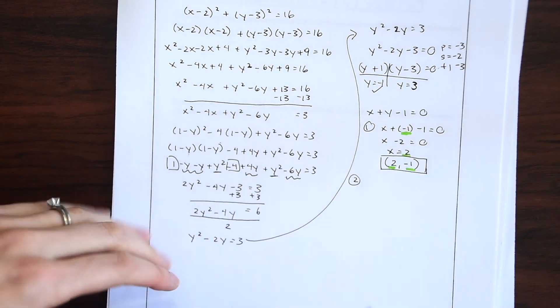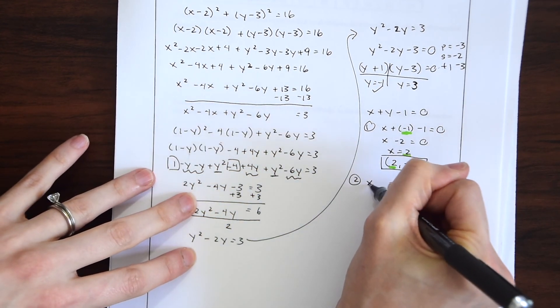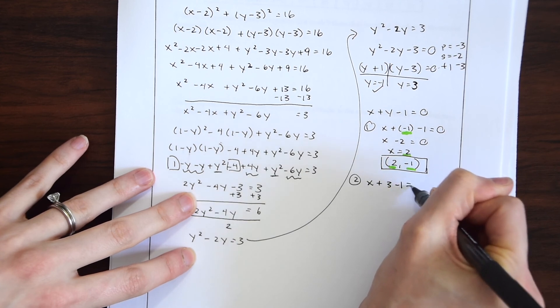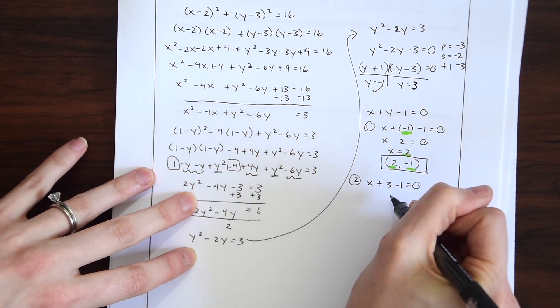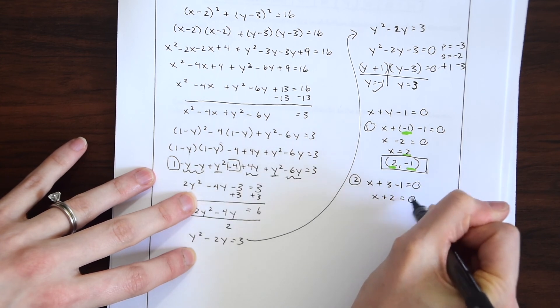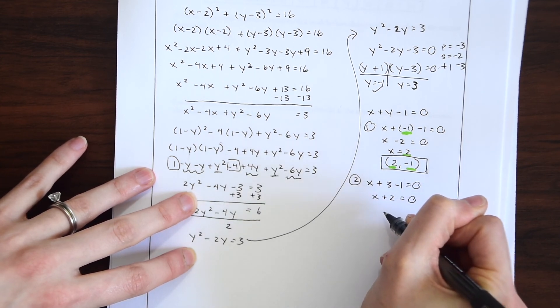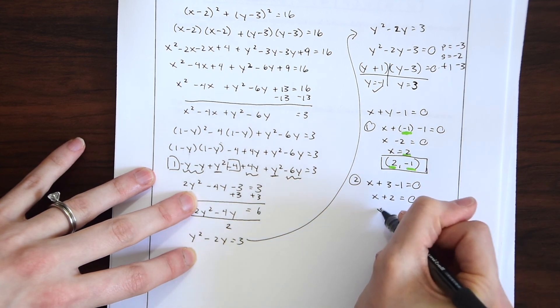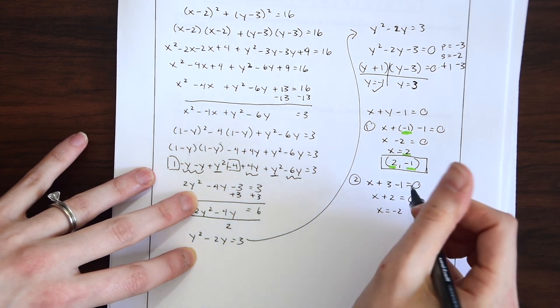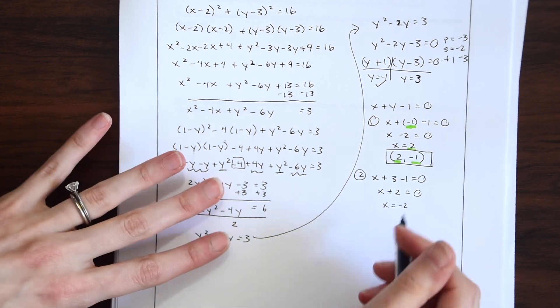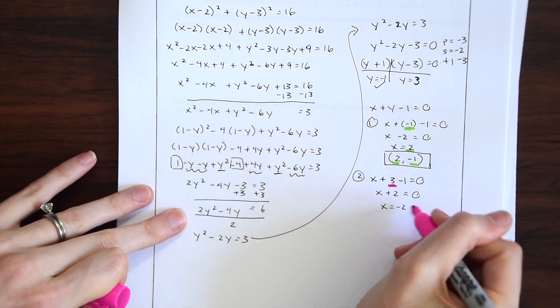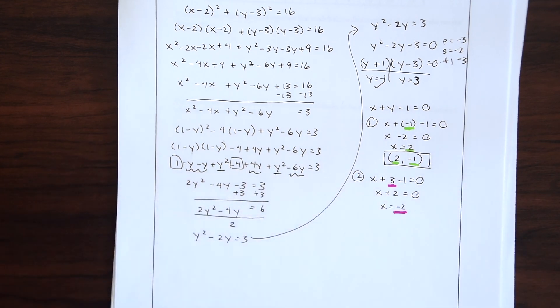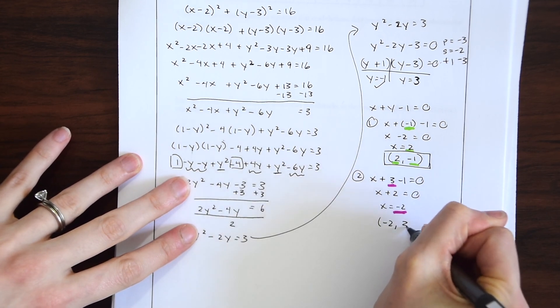And now to plug in 3. So we have x plus 3 minus 1 equals 0. So we're just plugging this in back to that equation again. And this will give us x plus 2 equals 0. And now we see that x is equal to negative 2 because negative 2 plus 2 equals 0. So if we know x is equal to negative 2 when y is equal to 3. So here's y equal to 3 and x is negative 2. We have our second pair. Negative 2 comma 3.